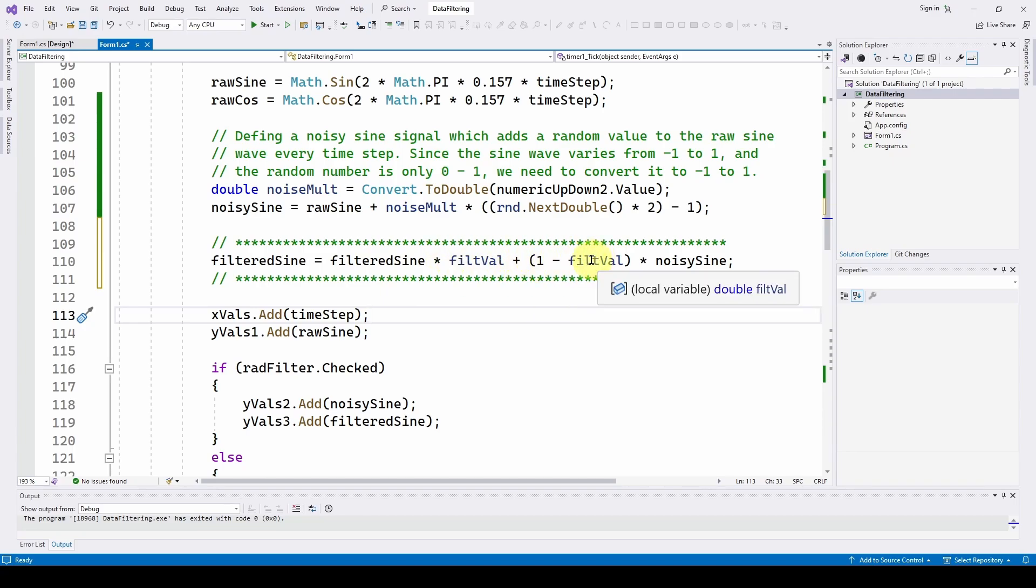You take the old value times that filter confidence in the old value, plus one minus that times the noisy sine wave, the latest value.